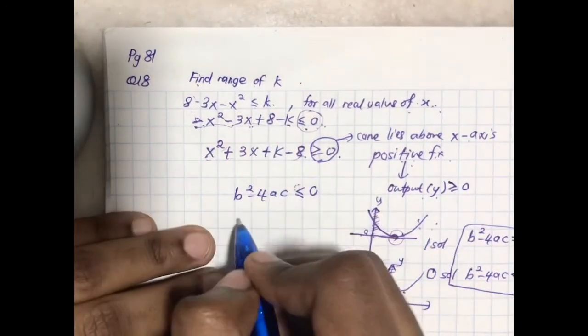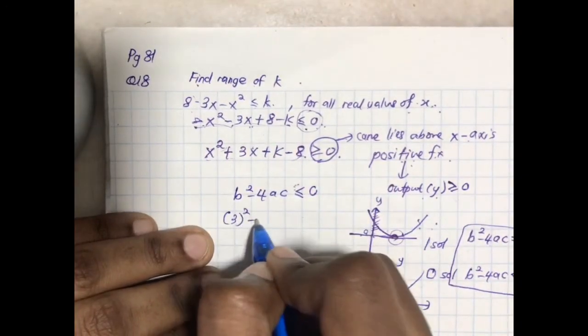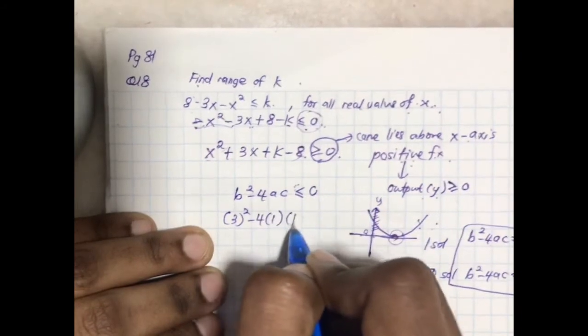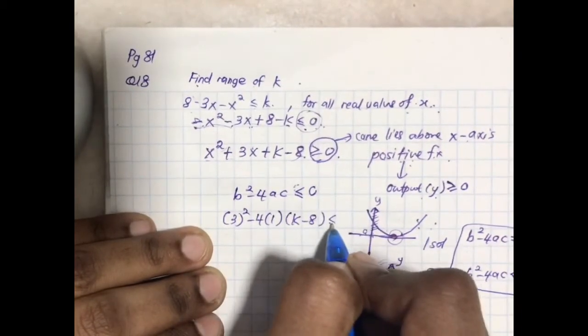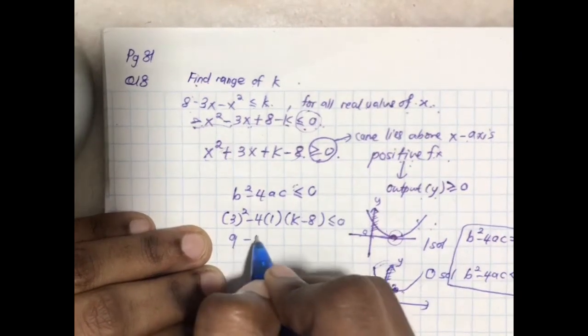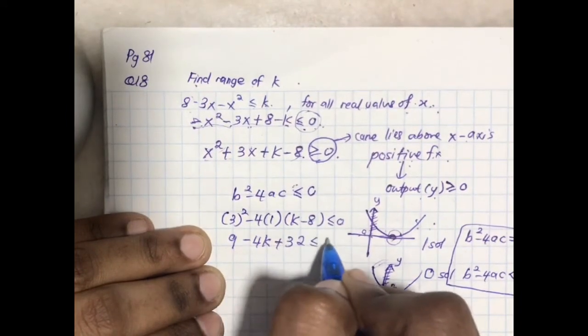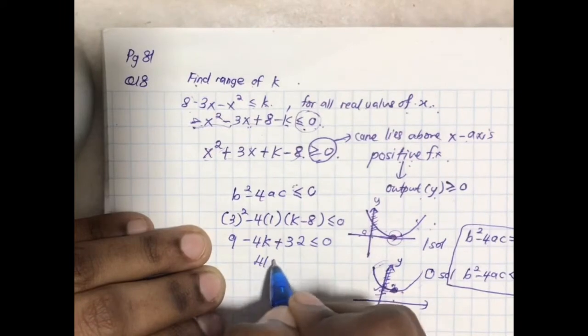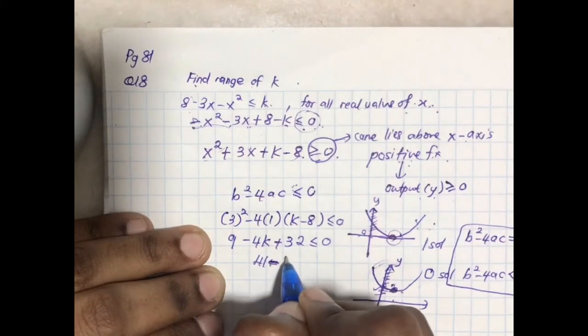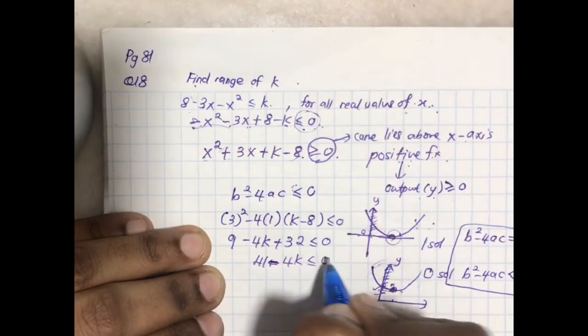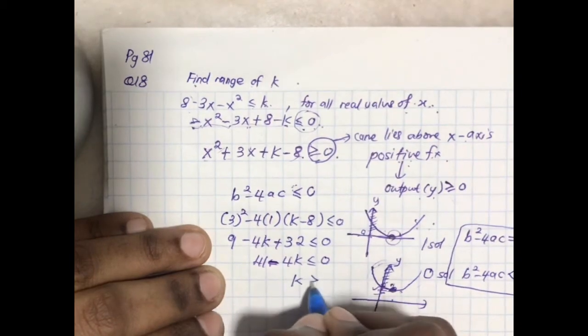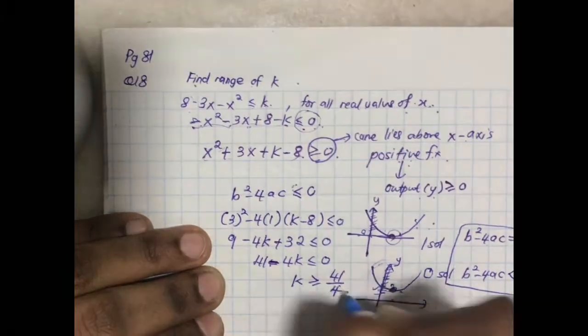Now let's take your b value from here. So $(3)^2-4(1)(k-8)$ less or equal to 0. What do you get? $9-4k+32$. Leaving me with $41-4k$. And that is going to give us $k \geq 41/4$.